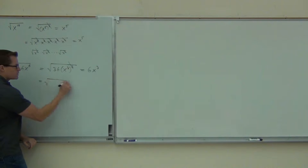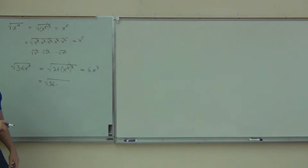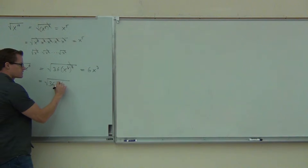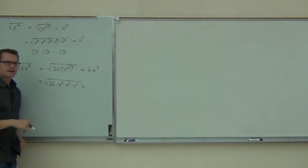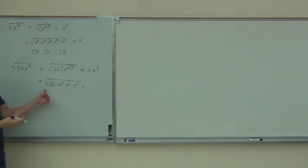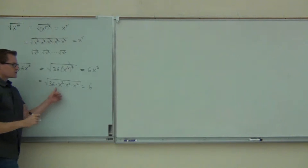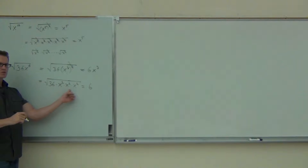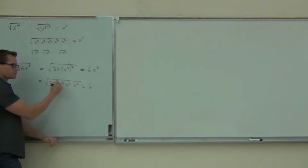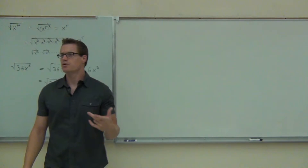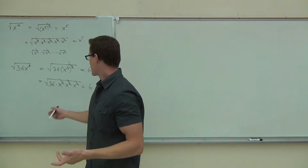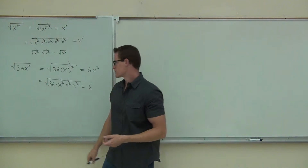So if we did it the other way, we could write this as 36. And instead of x to the 6th, what I'd do is write this as x squared, x squared, x squared. You'll see that I can still take the square root there. Square root of 36 is still 6. Square root of x squared, square root of x squared, square root of x squared — because I can separate it like that, every one of those twos is going to be crossed out. The square root is going to undo every one of those squares. How many x's do I have left over? I'm going to have x to the 3rd.